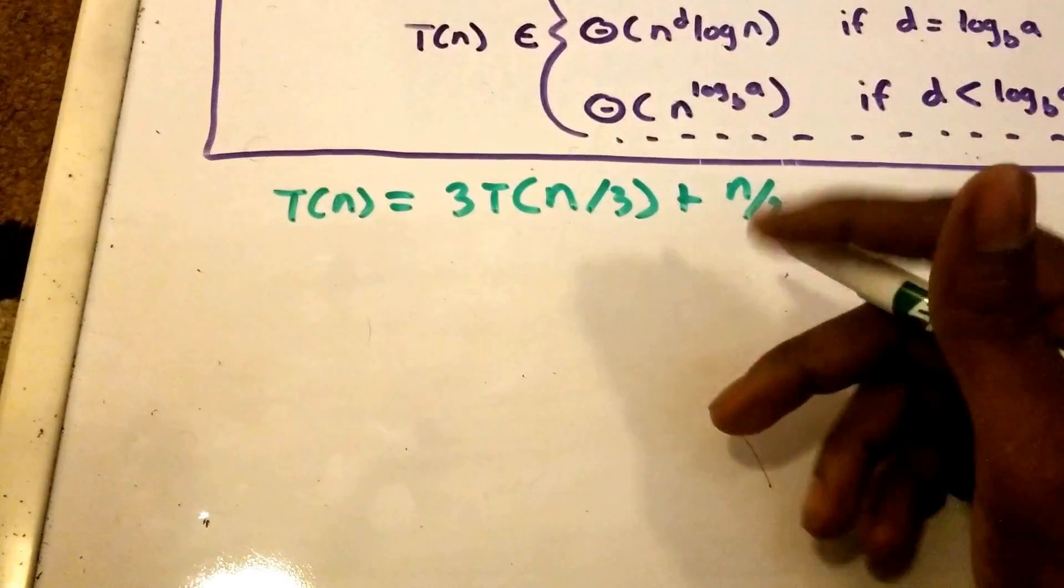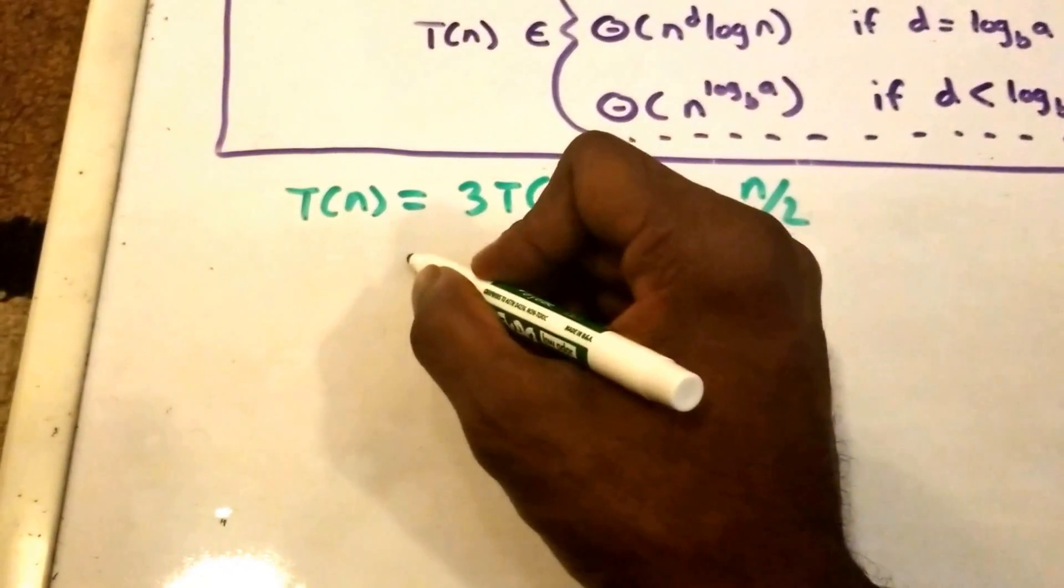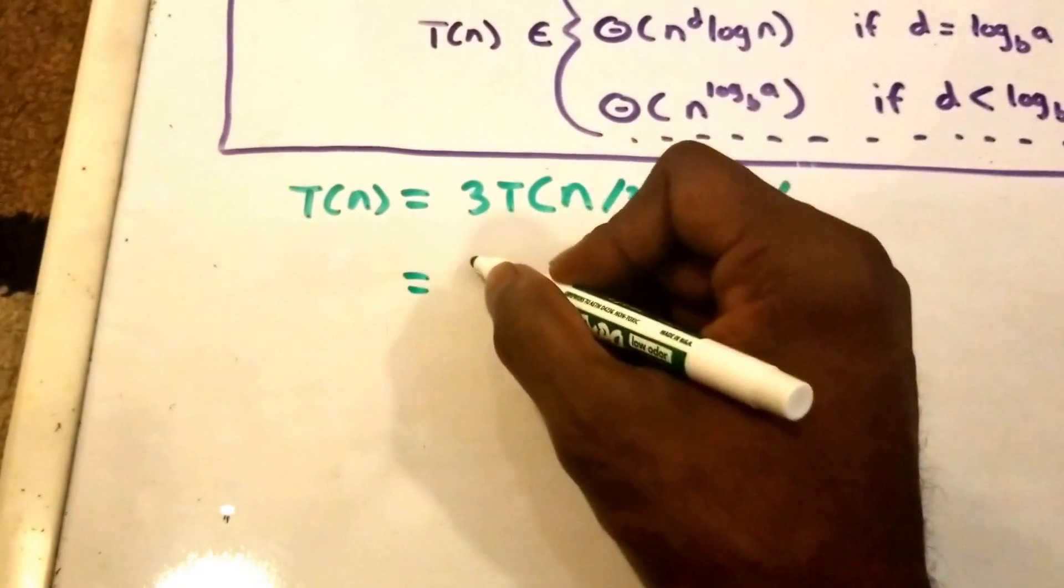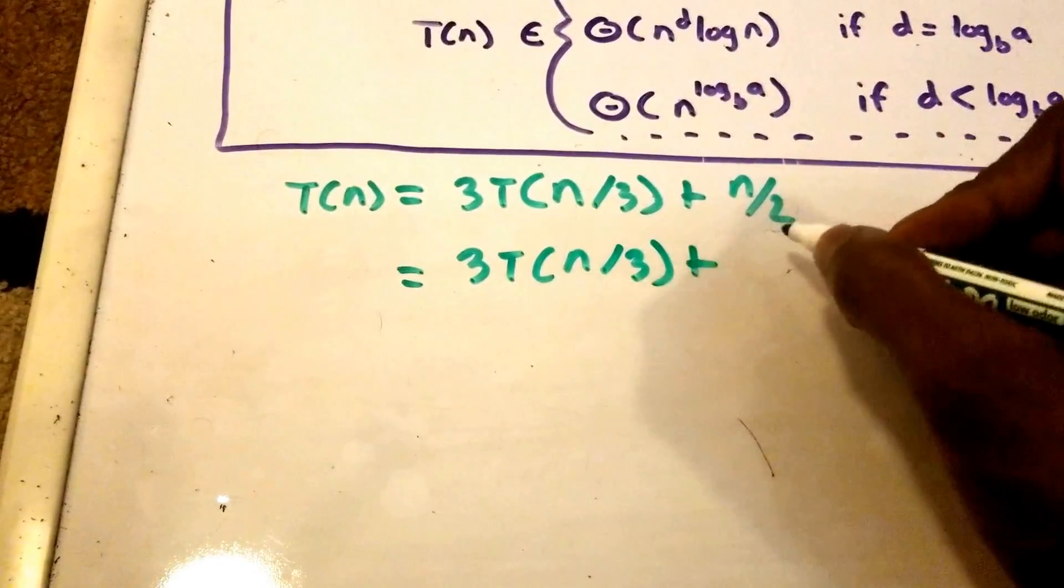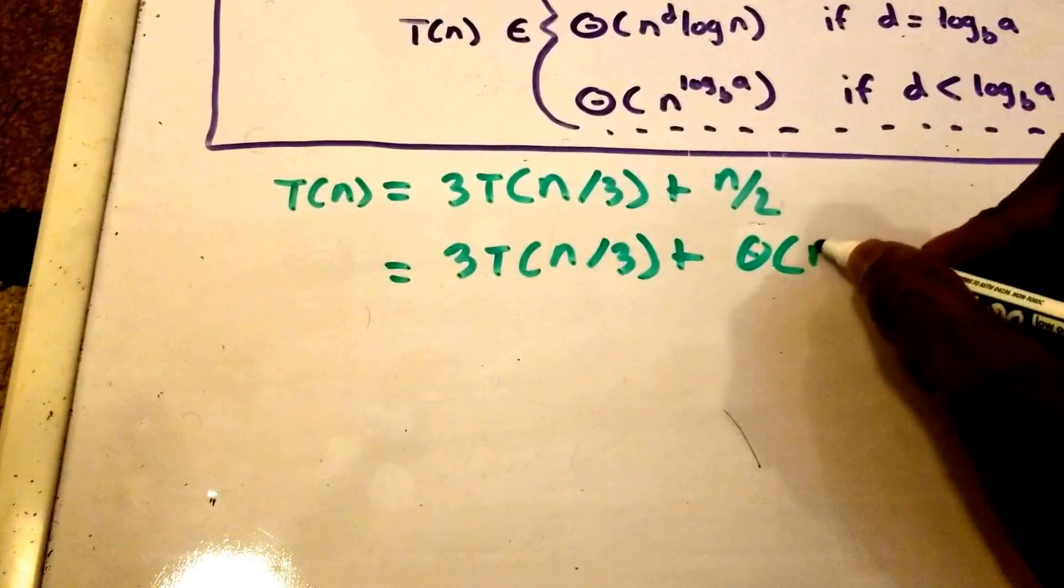So you're going to just have to trust me here. I do have videos on this on how to prove this, but this is just equal to 3 times T(n/3) plus theta of n.